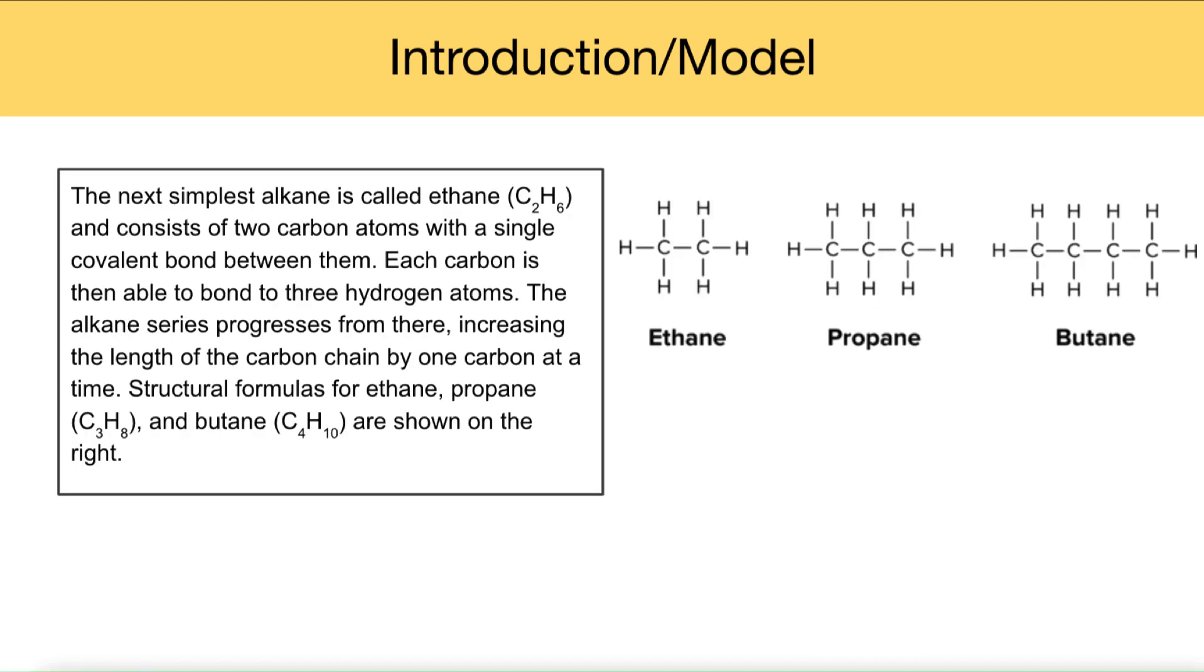The next simplest alkane is called ethane, C2H6, as you can see in the picture here. Ethane consists of two carbon atoms with a single covalent bond between them. Each carbon is then able to bond to three hydrogen atoms.